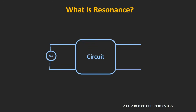In an electrical circuit, resonance is nothing but a phenomenon at which the response of the circuit is maximum for a given particular frequency. Let's say we have one circuit which contains a resistor, inductor, and a capacitor, and we have applied some AC voltage source of a particular frequency. Assume that this voltage source is tunable. As we tune this voltage source to a particular frequency, it will happen that the response of the circuit will be maximum. This phenomenon is known as resonance in the electrical circuit.